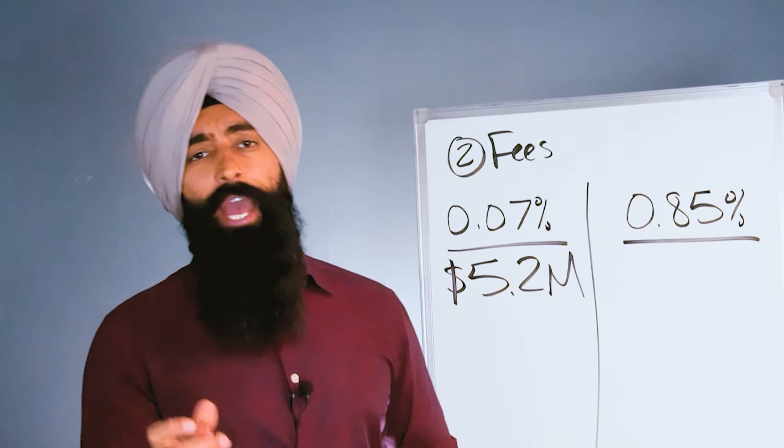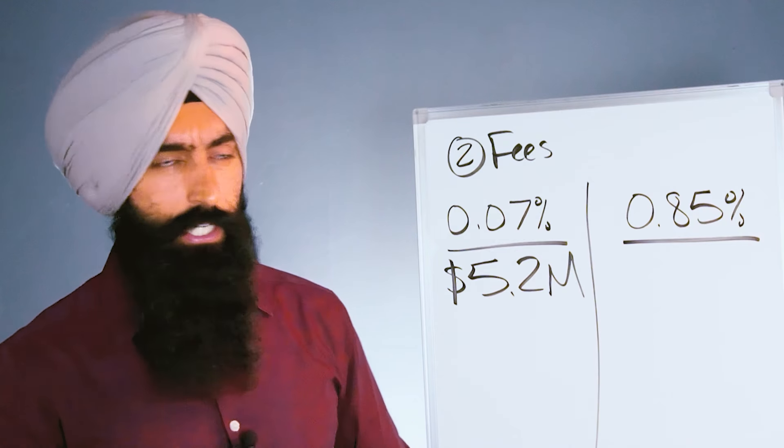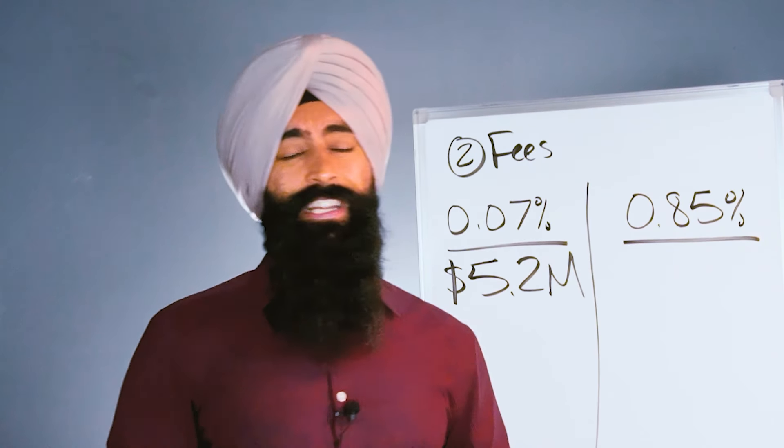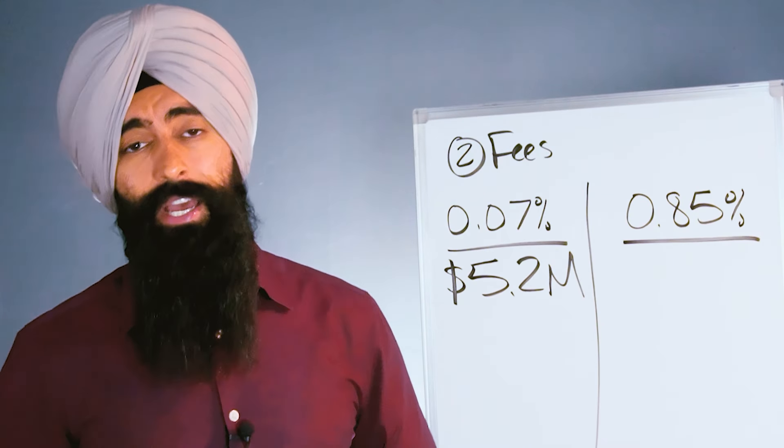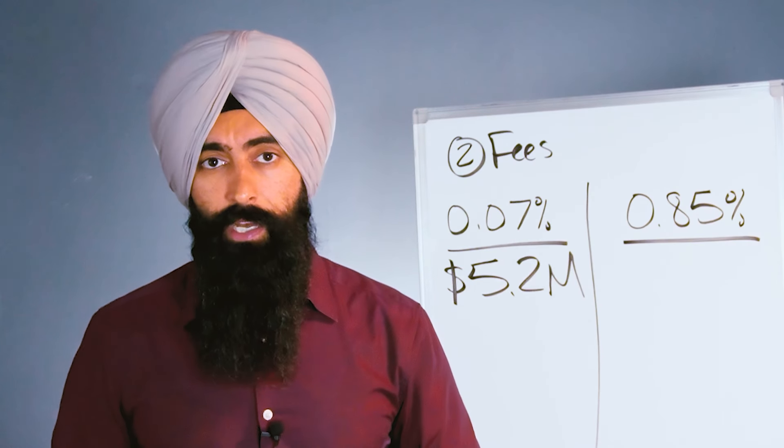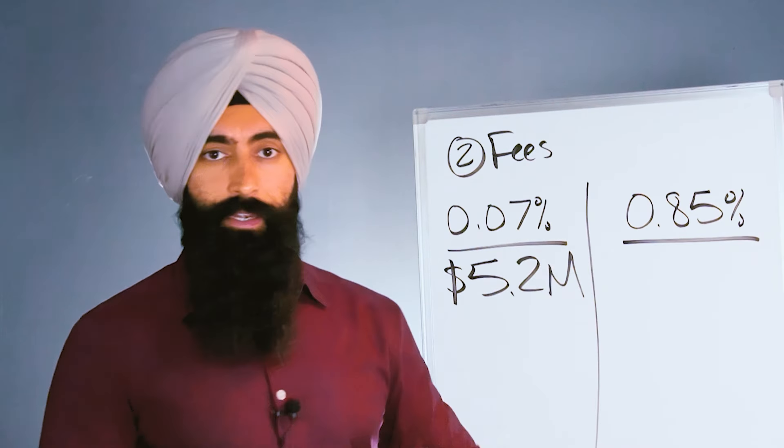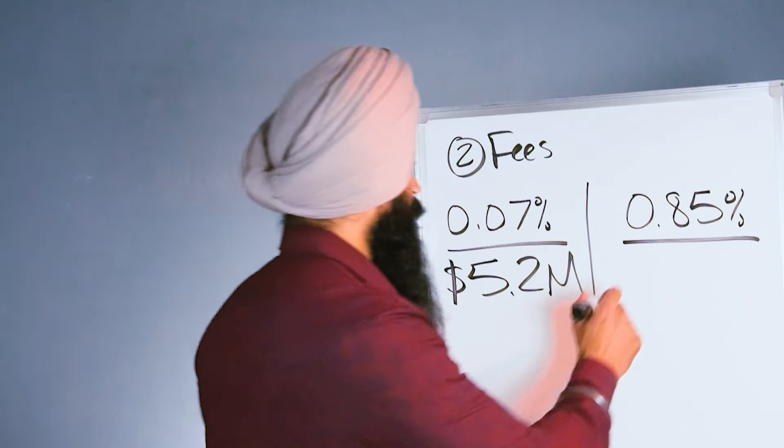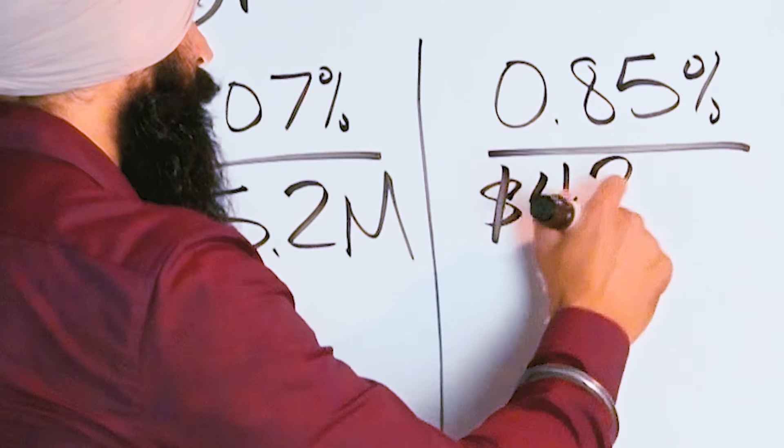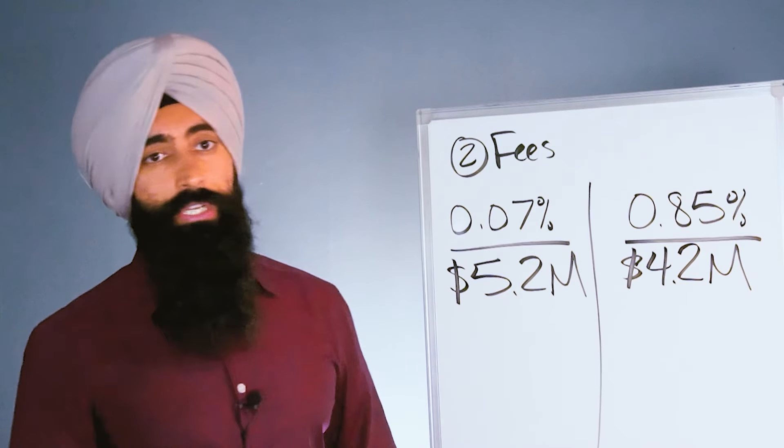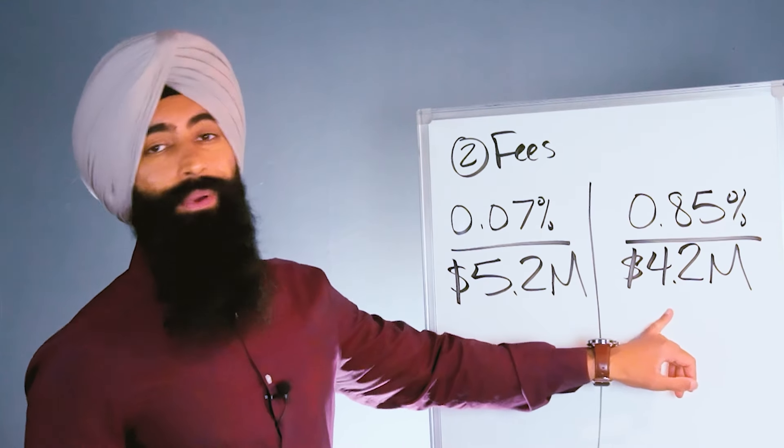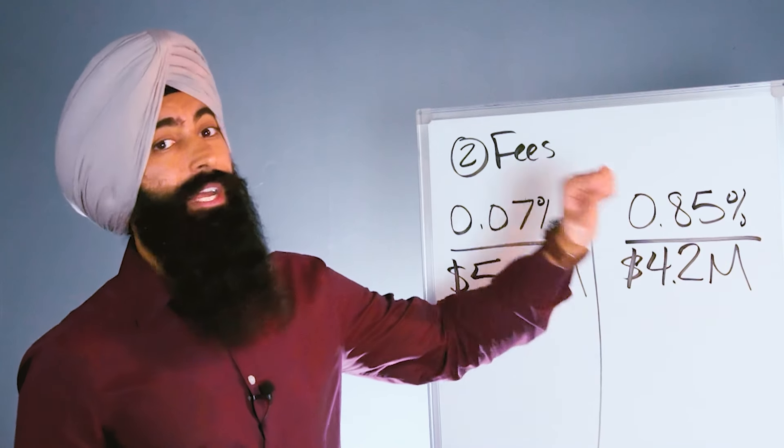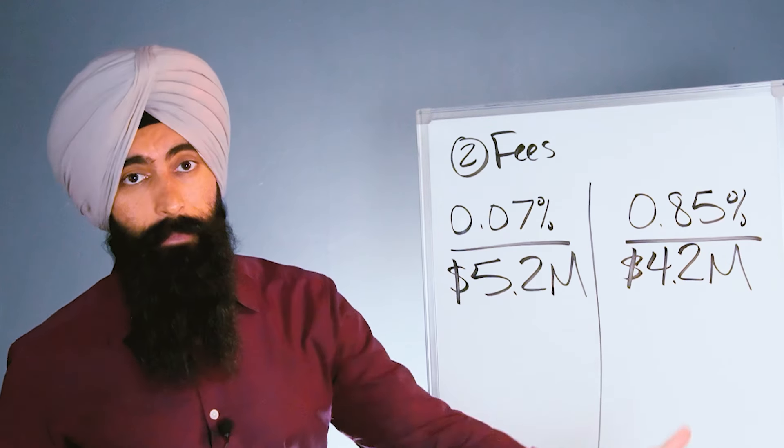But if you have a higher expense ratio, say 0.85%, well now you're not going to have $5.2 million, you're not going to have $5 million, you're not going to have $4.5 million - you're going to have around $4.2 million. That additional million dollars went to fees, assuming you got the same return and invested the same amount of money for the same amount of time.